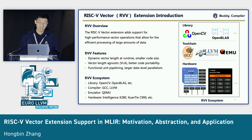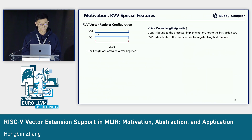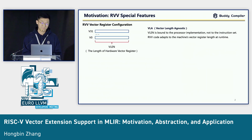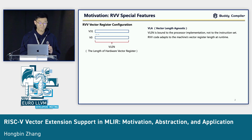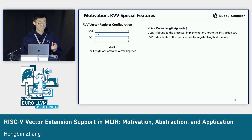Today our topic is about how to support these awesome RVV features in MLIR. So why should we add these features to MLIR? Because we meet some limitations, particularly around the VLA strategy. VLA is vector-length agnostic.